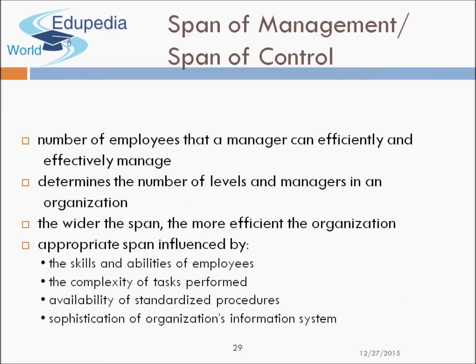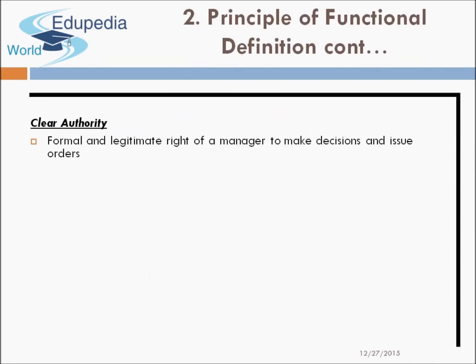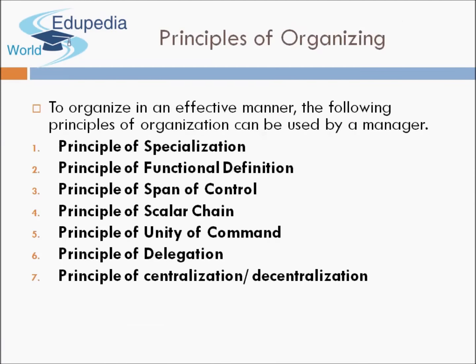To conclude, we have covered the key principles management must keep in mind while making an organization structure: specialization, functional definition, span of control, scalar chain, unity of command, delegation, and centralization and decentralization. I appreciate you watching this long video. I would suggest watching the next video as well, which covers departmentalization and the types of departmentalization prevailing in today's organizations. Thank you.